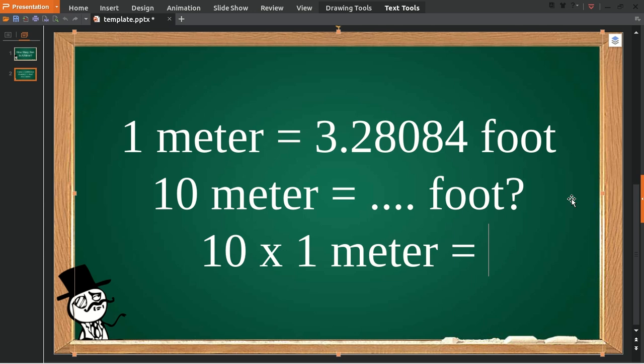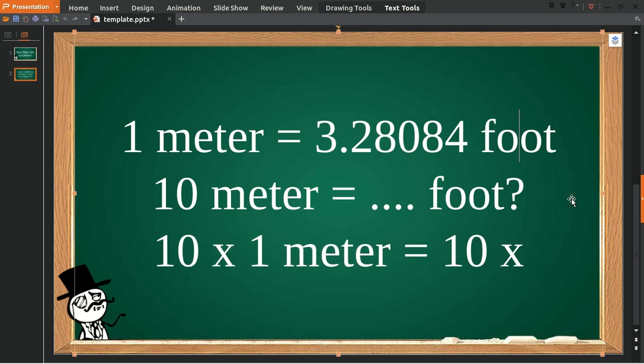Okay, and then give it an equal sign. And then because I have 10 on the left, I must have 10 on the right as well. Oops, 10, and then multiply it with this number.